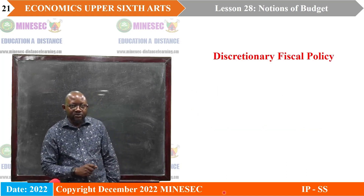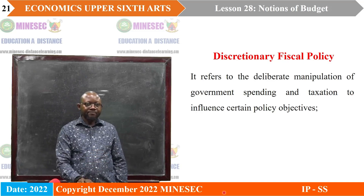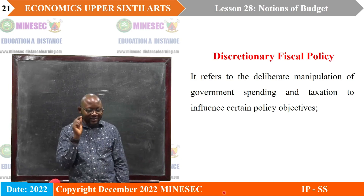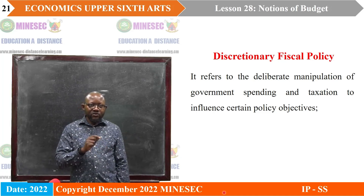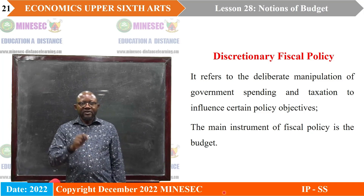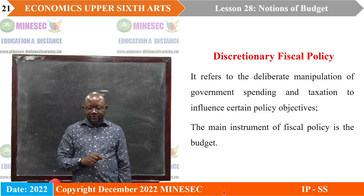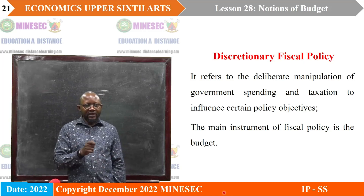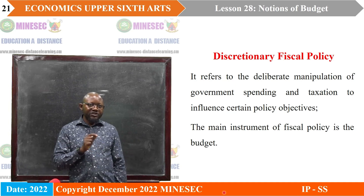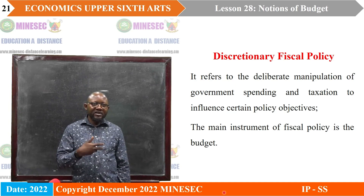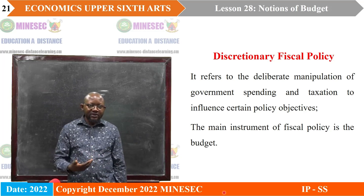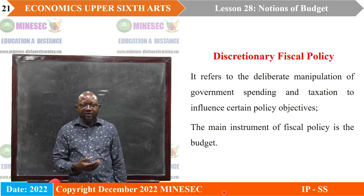Now let's go to discretionary fiscal policy. This is a deliberate manipulation of government spending and taxation to influence certain policy objectives. The main instrument of fiscal policy is the budget — we saw the three types: deficit, surplus, and balanced budget. It's a deliberate manipulation of G and T — government expenditure and taxes — to permit government to attain certain policy objectives such as full employment, price stability, a steady rate of economic growth, equitable distribution of income, and so forth.